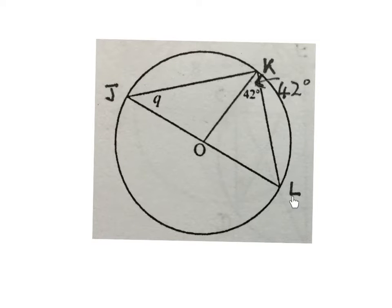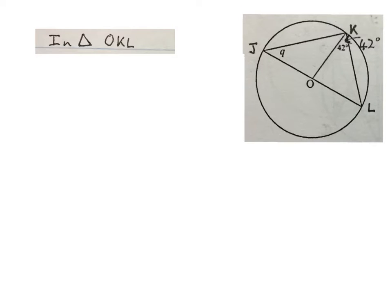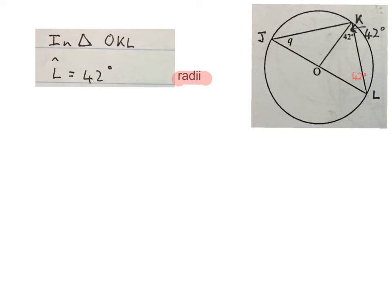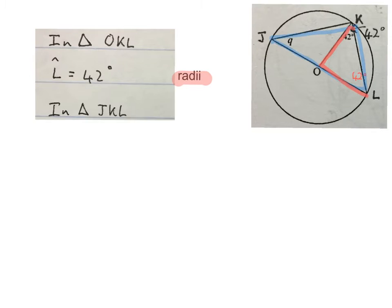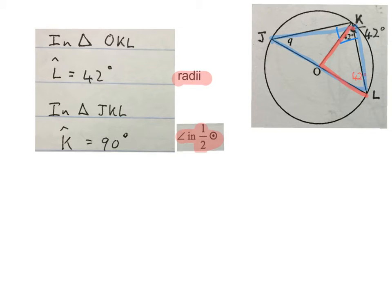In this sketch we have JOL as the diameter of the circle, K on the circumference, that angle is 42 degrees, and we need to work out Q. I start in triangle OKL. Angle L is 42 degrees — because of radii, the radii are equal so the angles opposite them will be equal.